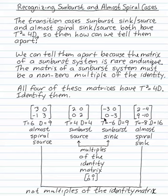The two matrices that are copies of the identity, here's two times the identity in the second case and minus three times the identity in the third case, those have to be sunburst systems.